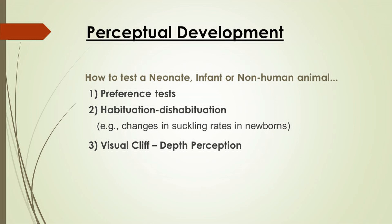Instead, we're going to focus on how do we know what the child perceives at varying ages — what are the research procedures that one might use to essentially step into the perceptual world of a neonate, newborn, or an infant without language, or even a non-human animal. One of these techniques is the preference test. The basic idea is if there's a preference, then the child or little animal can distinguish between multiple items or objects.